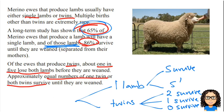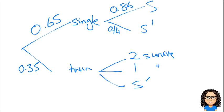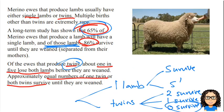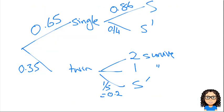From those that produce twins — that's the second branch of the tree — one in five lose both lambs. So that's zero surviving: one in five, or 0.2. Then approximately equal numbers of one or both twins survive. So these two numbers are equal. If none surviving is 20%, the remainder is 80%, divided by 2 gives 40%. So that's 0.4 and 0.4.